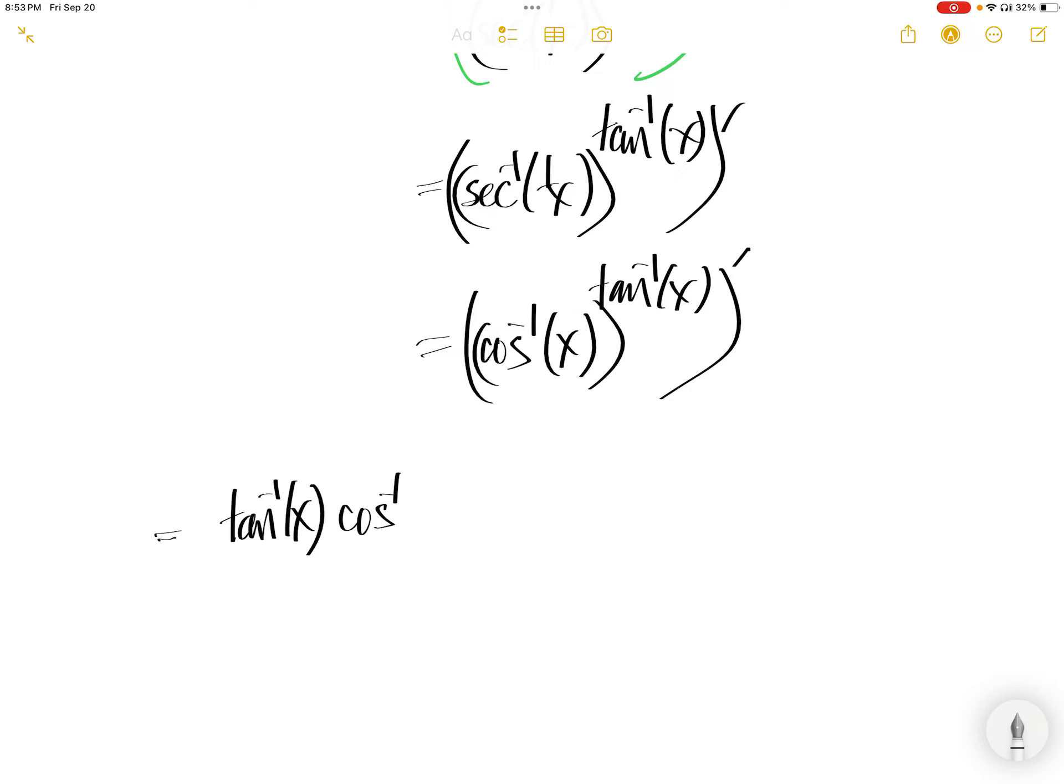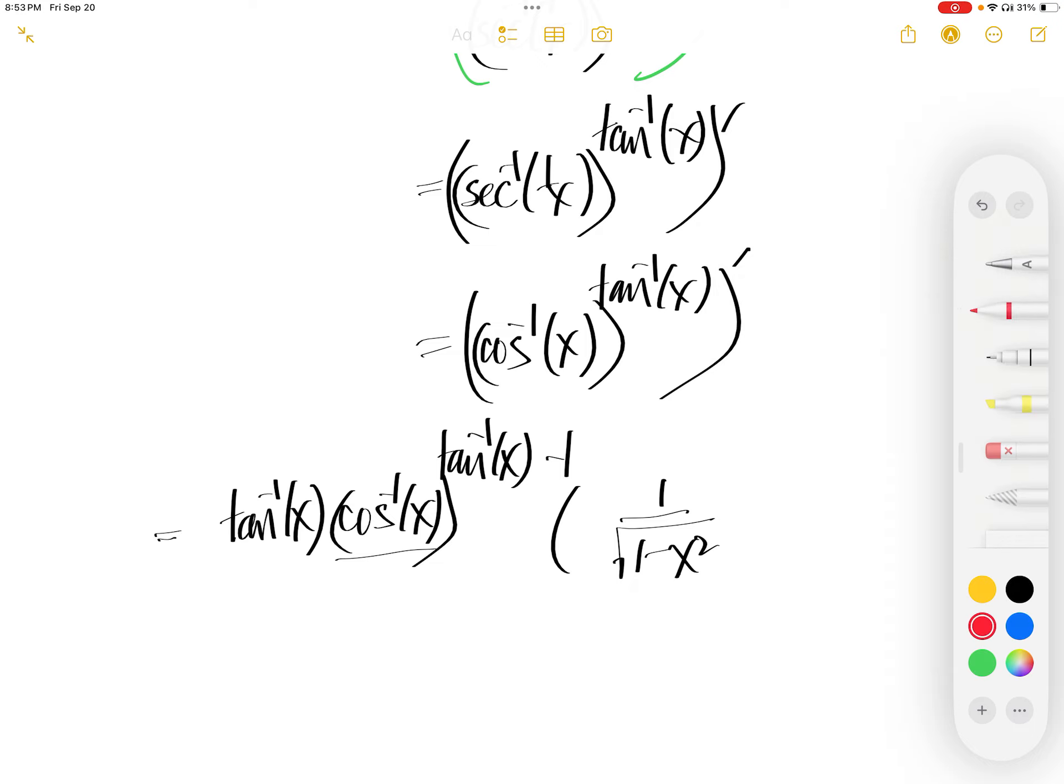You have arccot of x to the power of arccot of x minus 1 times the derivative of arccot of x. This is 1 over square root 1 minus x squared, similar to the arcsin, except you need to add in with the negative sign.